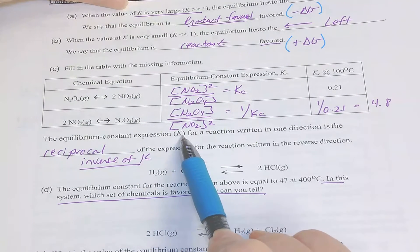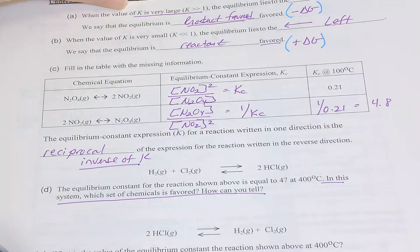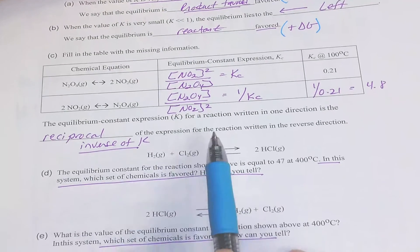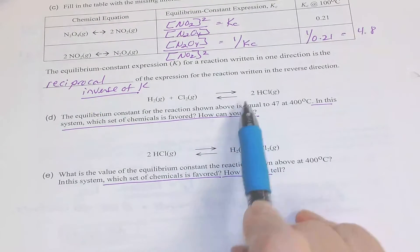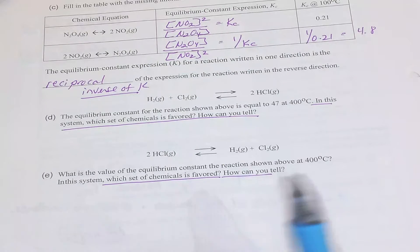So if you flip your reaction, it's the inverse or reciprocal of that K value. Answer these two questions based on the size of your K values. See if you can come up with an answer for that, and we'll discuss it in class.